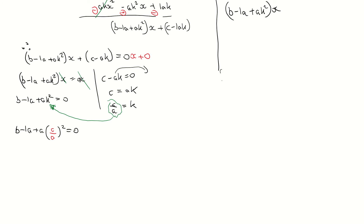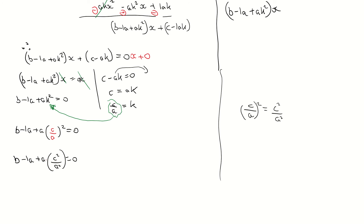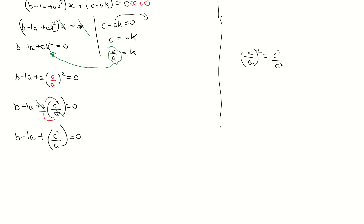Using rules of indices: c over a all squared means I square the numerator and the denominator, giving c squared over a squared. So that's b minus a plus a times c squared over a squared equals 0. Multiplying a over 1 top by top and bottom by bottom, one of the a's on top cancels with one on the bottom, leaving b minus a plus c squared over a equals 0.